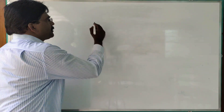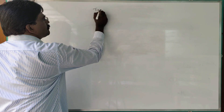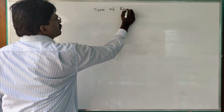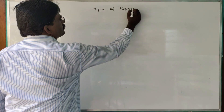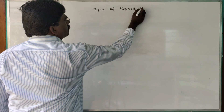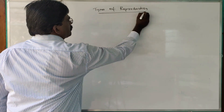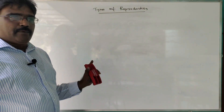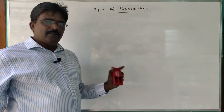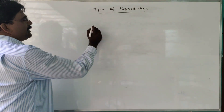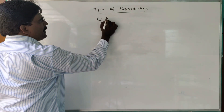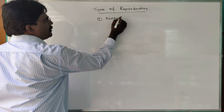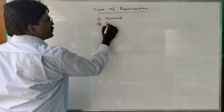Types of reproduction: there are two types of reproduction. They are — first one, asexual, and second one, sexual.